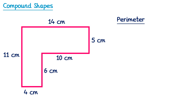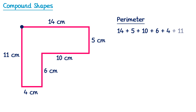Now that we've found the lengths of the missing sides, we can calculate the perimeter just like before. If we do 14 plus 5 plus 10 plus 6 plus 4 plus 11, and add all of these together, we get the perimeter, which is 50 centimeters.